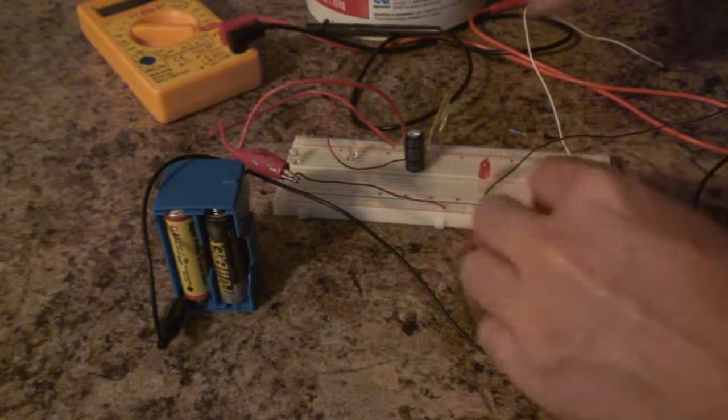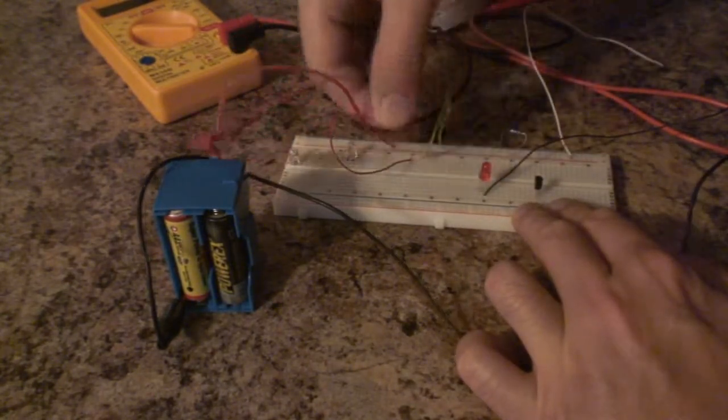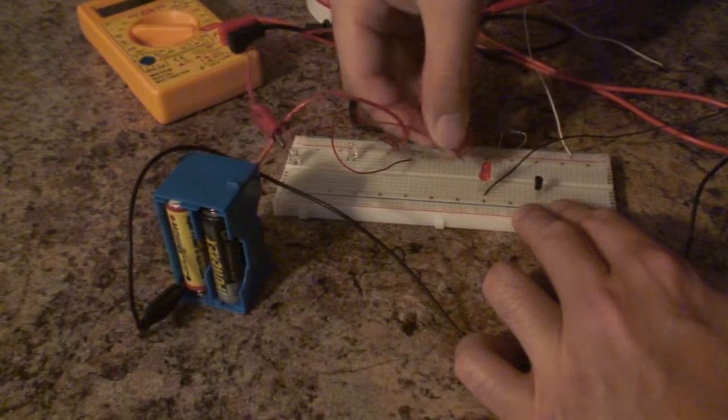The batteries do have enough power to light an LED, which isn't much. What would happen if I just skipped the resistor?